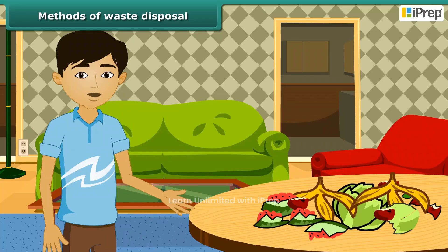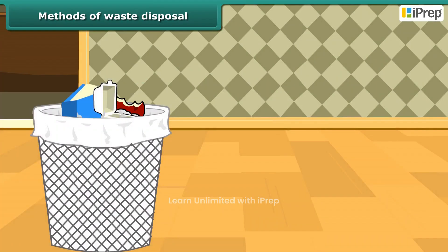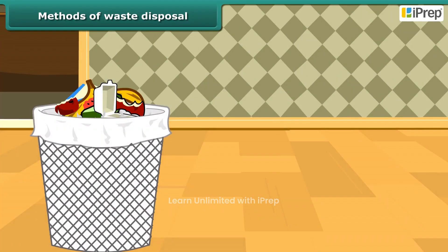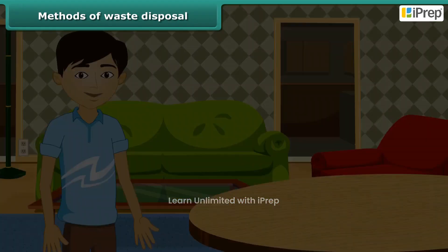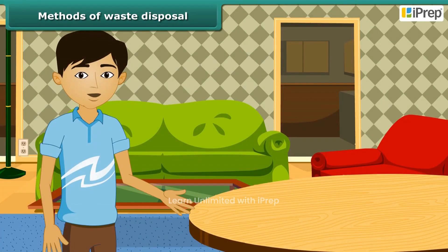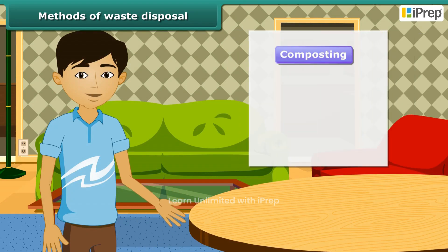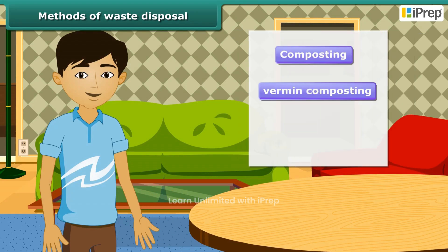When we peel off fruit and vegetable skin, it is necessary to dispose of it in a dustbin. Careless lying garbage attracts disease-causing insects. Let us look at various methods of waste disposal, like composting, vermicomposting, and recycling of paper.